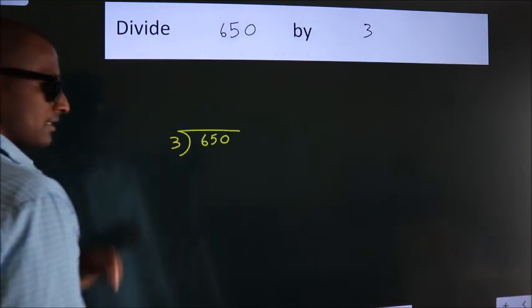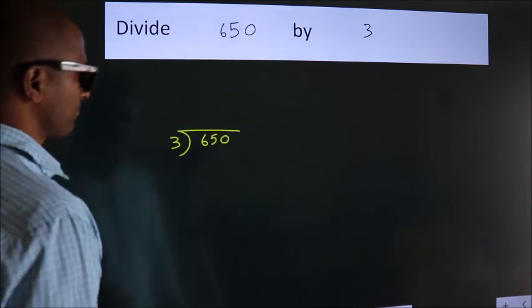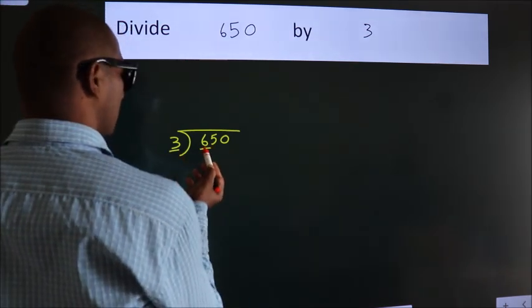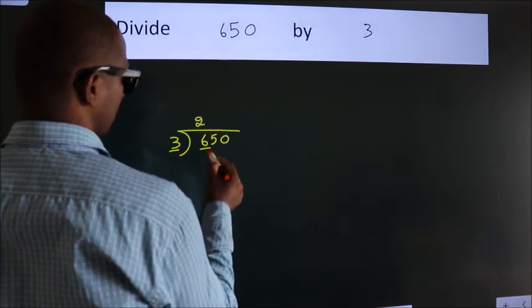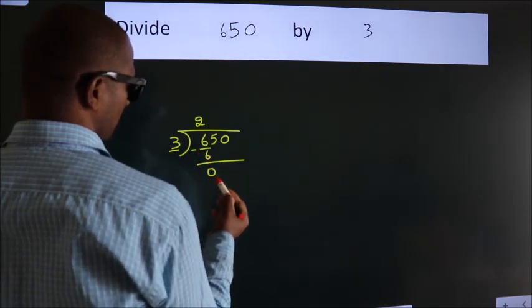This is your step 1. Next, here we have 6, here 3. When do we get 6? In 3 table, 3 2s, 6. Now, we should subtract. We get 0.